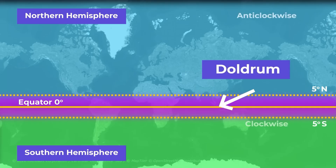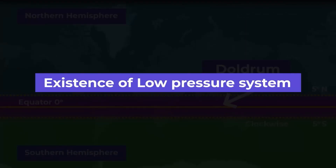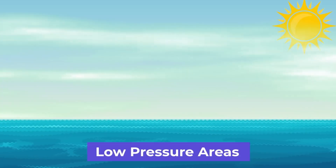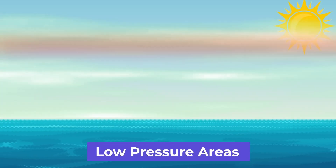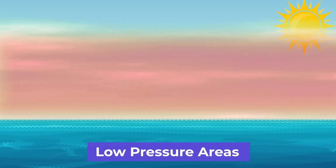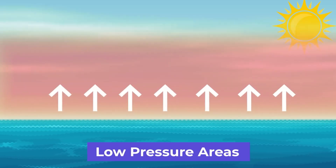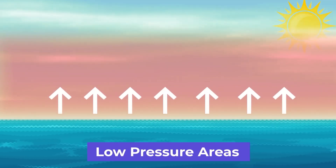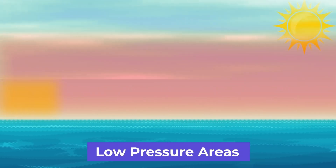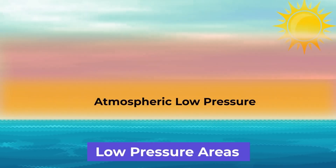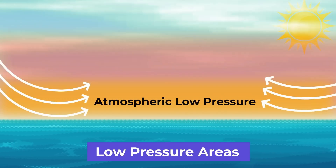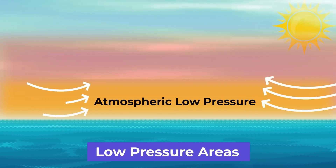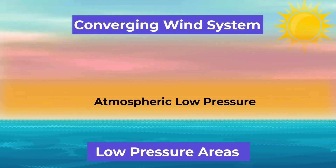The third condition for cyclone formation is a low pressure area. A low pressure area is one where the air temperature is relatively high — the air is warm and rising — and therefore there is low pressure on the surface. Due to the high temperature, the air moving upward creates an atmospheric low pressure region. This low pressure attracts air from the surrounding atmosphere over the ocean, creating a cyclone.